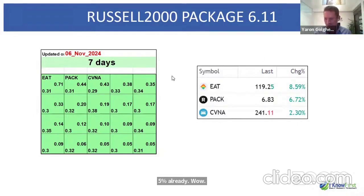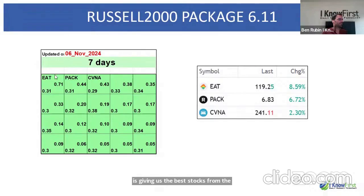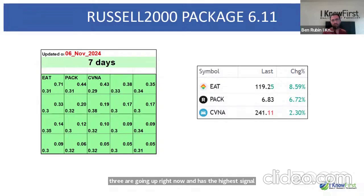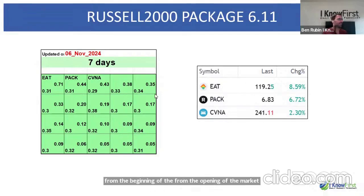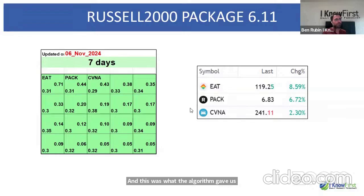The Russell 2000 is up around 4-5% right now and soaring. From the Russell 2000 universe, the algorithm provided the best stocks: EAT, PACK, and CVNA — all three are pointing up with the highest signals in the package. This data was captured at the market open, so the situation may be even higher now. This came from the seven-day time frame in today's forecast.